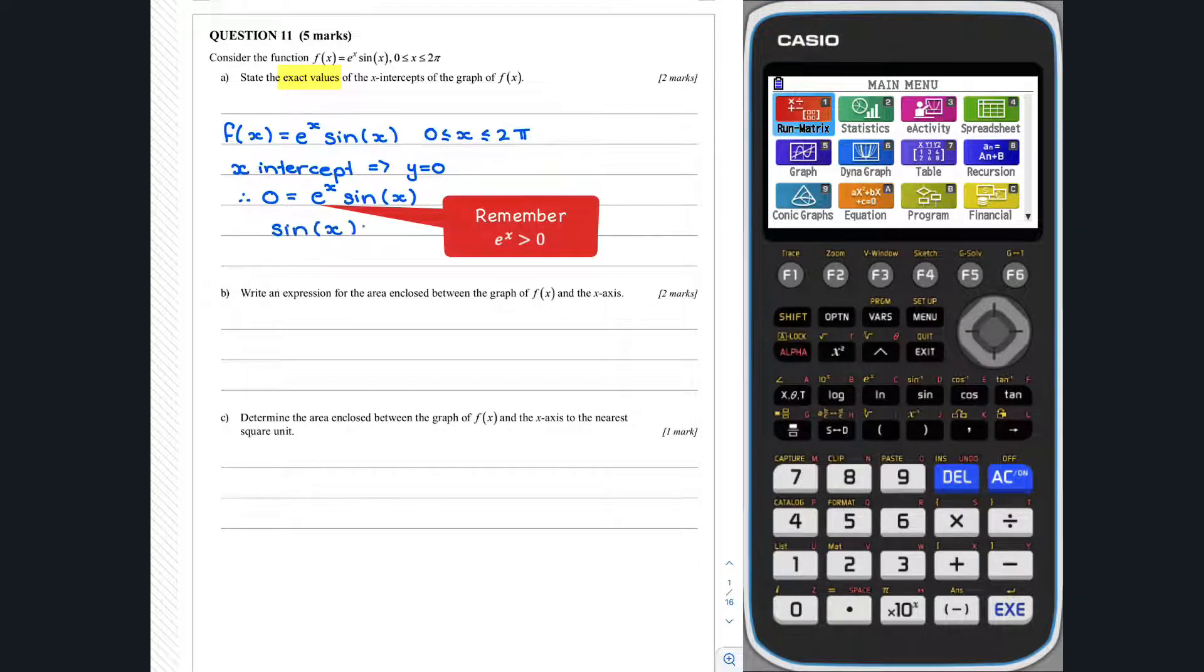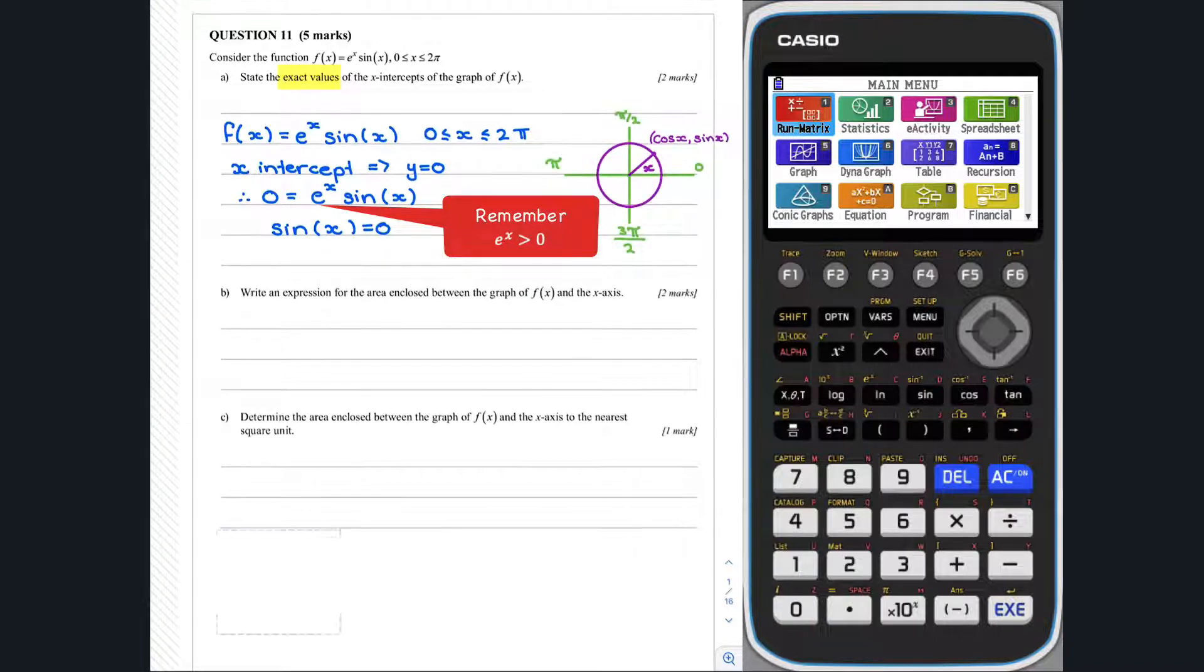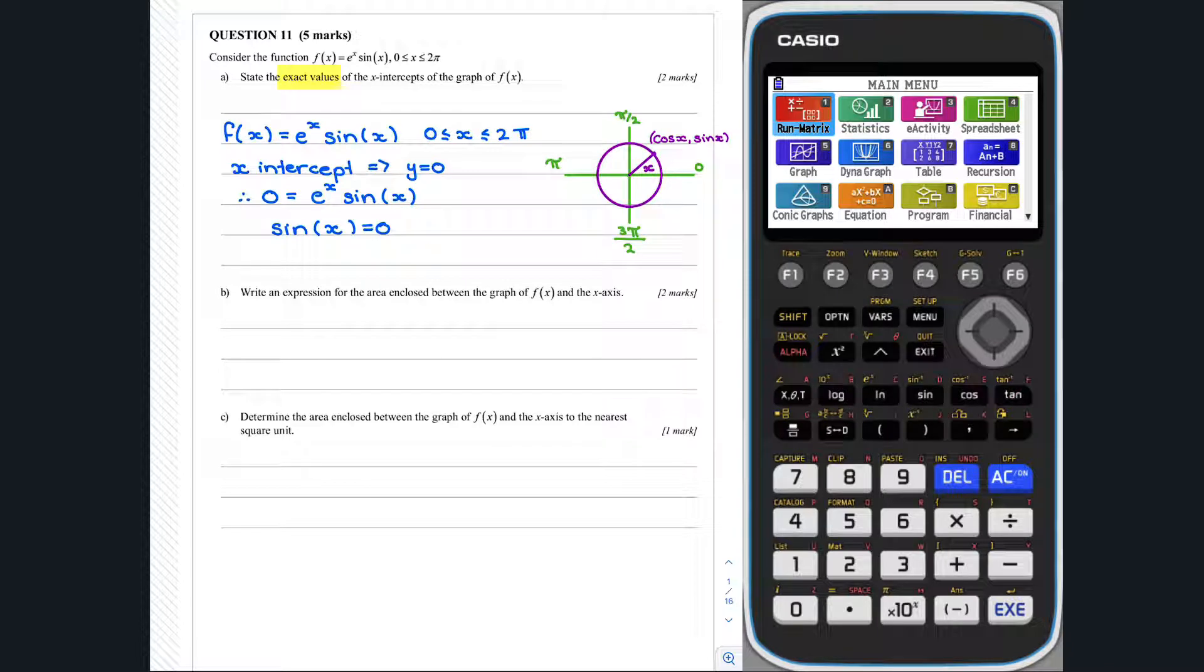So, when is sine x equal to 0? Well, if we consider our unit circle, sine x is equal to 0 when x equals 0, or x equals pi, or x equals 2 pi, or x equals 3 pi, and so on.